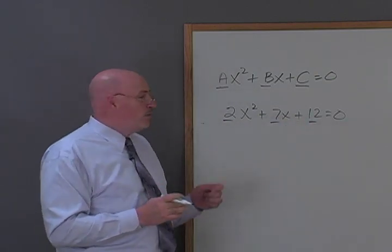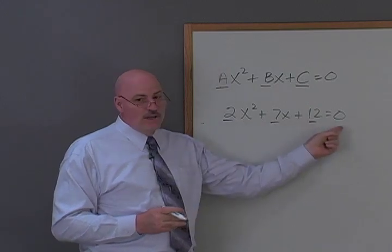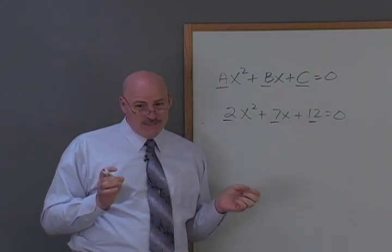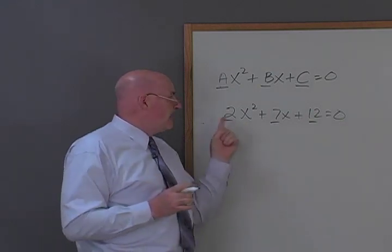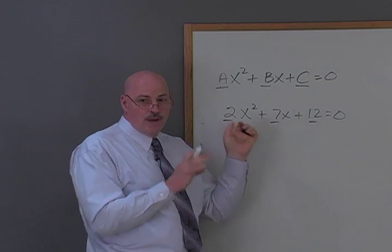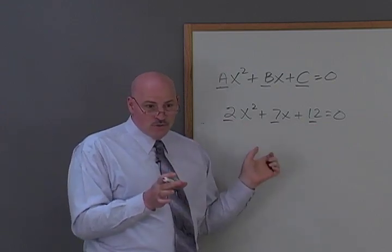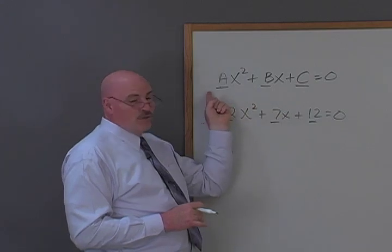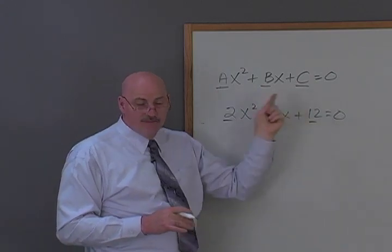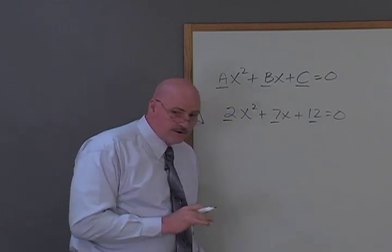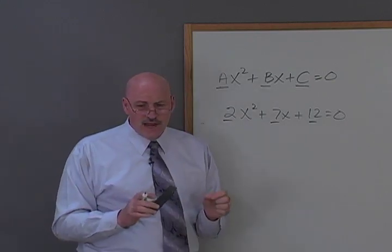And we also know that the first thing we would do if we had an equation like this and we were going to complete the square is do what? Who remembers this? We're going to divide through by 2 because we're more comfortable if we have x squared by itself for completing the square. So, instead of dividing through by 2, we're going to divide through by a.